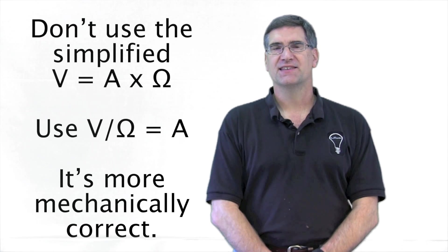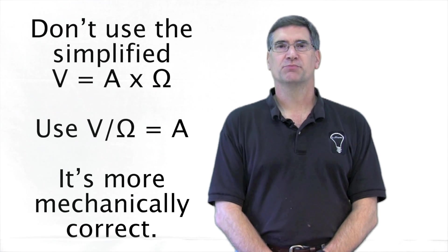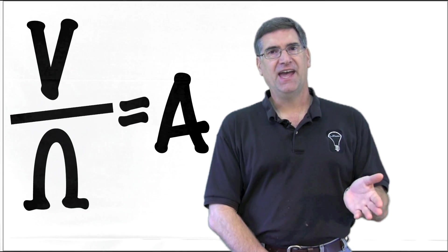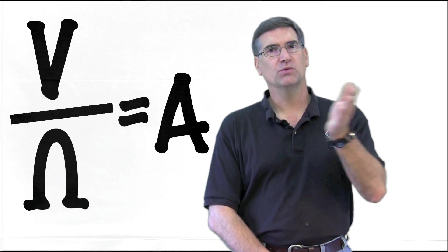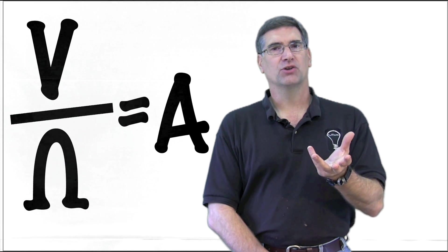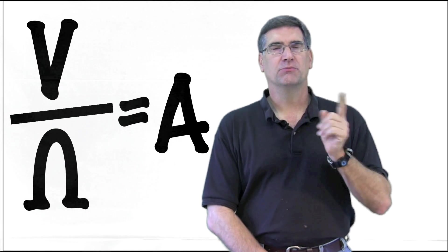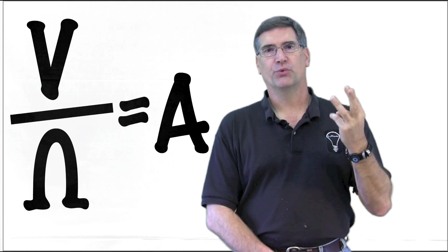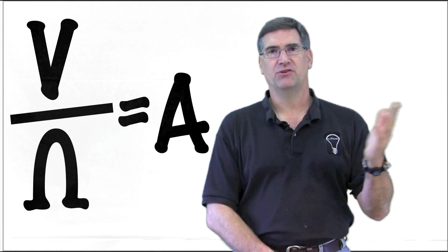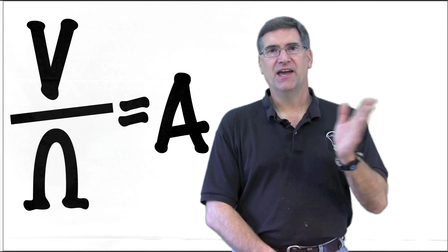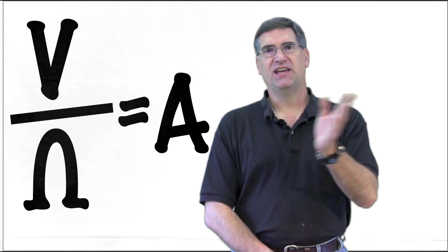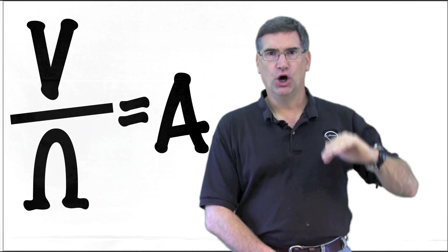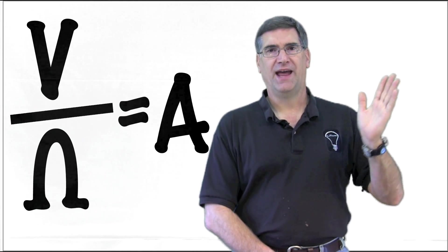I strongly advise against using the simplified formula to explain Ohm's Law. If you use volts, ohms, and amps, and you use the formula volts over ohms equals amps, then you're teaching only one concept — not multiple concepts. You're teaching the same concept one time, with two, three, or four applications depending on how you take the class. The formula EINR is bad because of the notation, but it's also bad because it doesn't include the fraction volts over ohms, which describes what happens to amps.